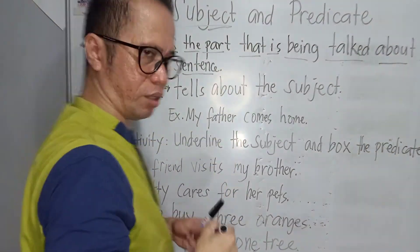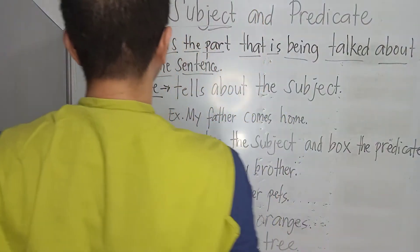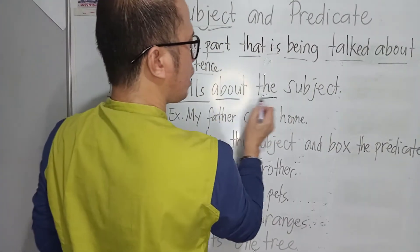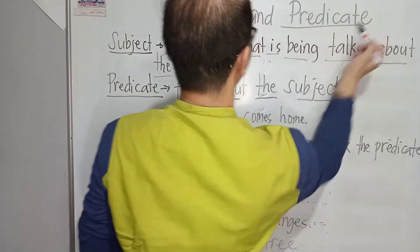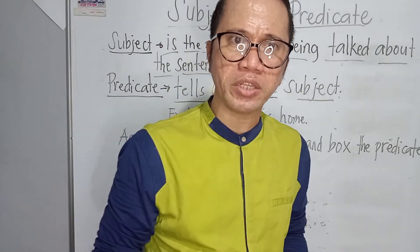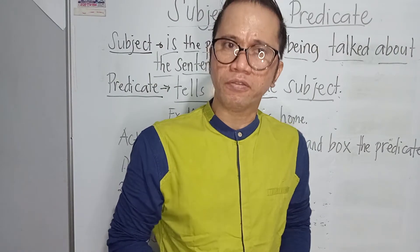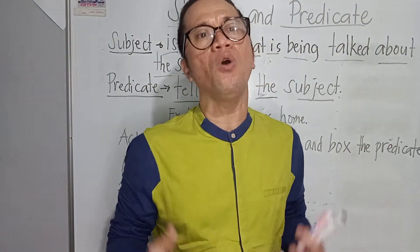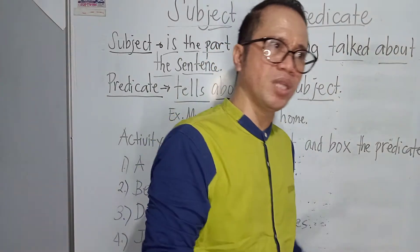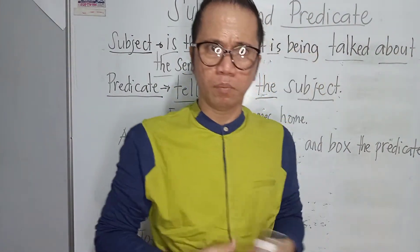And that is the subject. Next, what is a predicate? A predicate tells about the subject. Our objectives are: first, to identify the subject in the sentence; second, to identify the predicate in the sentence and how it functions; and what are the differences between the two — which is subject and predicate.